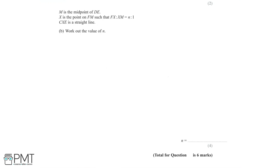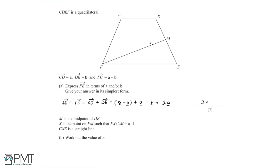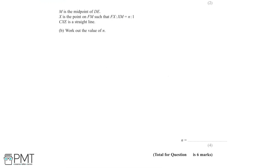Let's start by finding the vector FM using our diagram. To get from F to M, we go from F to C, then C to D, then D to M. Since M is the midpoint of DE, the vector DM is half of DE. We know DE equals b, so DM equals half b. Therefore the vector FM equals FC plus CD plus DM, which is a minus b plus a plus half b, simplifying to 2a minus half b.